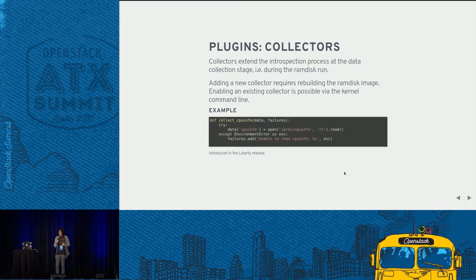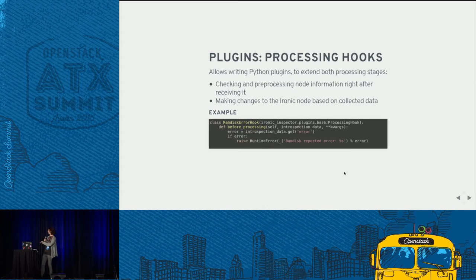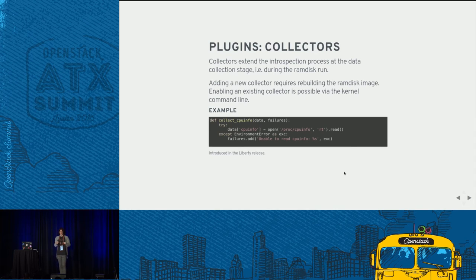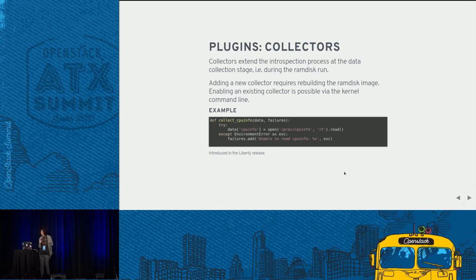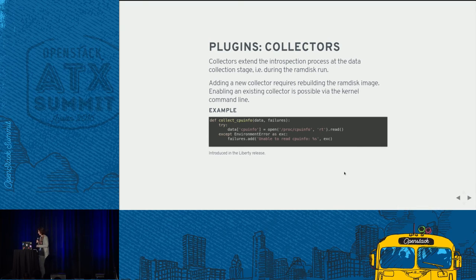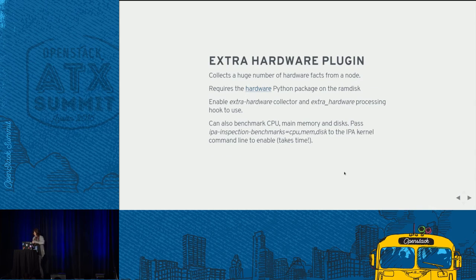On the RAM disk side, we call these plugins collectors. They're built into the IPA image to fetch more information. Unfortunately, adding a collector requires rebuilding your image. However, we enable and disable collectors via the kernel command line once they are built in. A Python function updates the data record with collected information. This is a simple example extracted from our standard plugin set — it raises an error during introspection if the RAM disk reported an error.